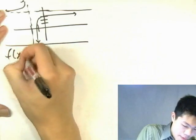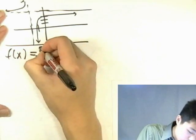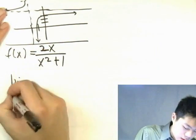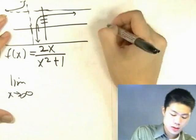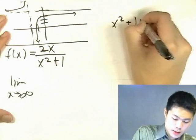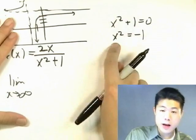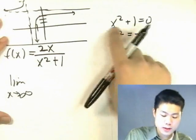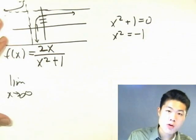Now another example. Say f(x) is equal to 2x over (x² + 1). Let's do the same thing. Is there a vertical asymptote? Can the denominator ever equal 0? If we set it to 0, we get something squared equals negative 1 — that's never going to happen. So because the denominator is always positive, there's no vertical asymptote.